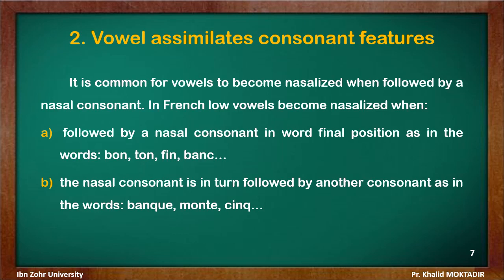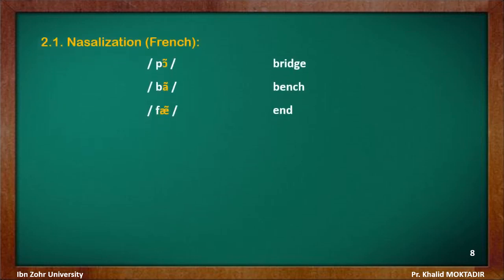Nasalization also occurs when the nasal consonant is followed by another consonant, as in the words bonk, molt, and sank. Looking at the data, the vowel is nasalized because it is in word-final position followed by a nasal. You can see the nasal in the French spelling — pont for 'bridge,' bon for 'bench,' fin for 'end.'